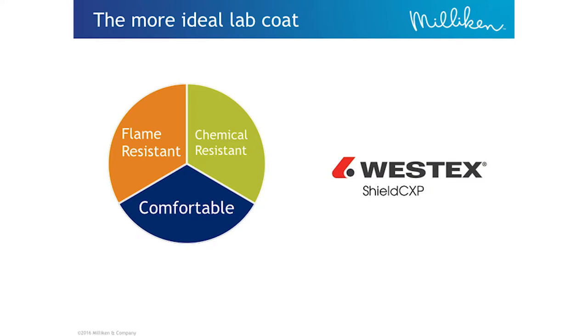So an ideal lab coat for most chemistry labs would need to have these three properties. It needs to be flame resistant, because many of the chemicals you're working with are flammable. You have open flames in a lot of these environments. It needs to be chemically resistant, and we can talk more about what exactly that means. And it needs to be comfortable, so that someone can wear that on a day in, day out basis.